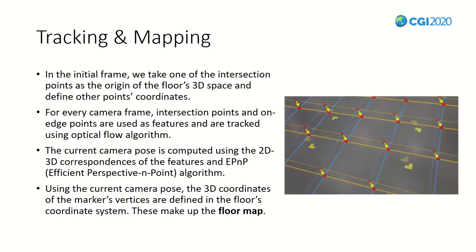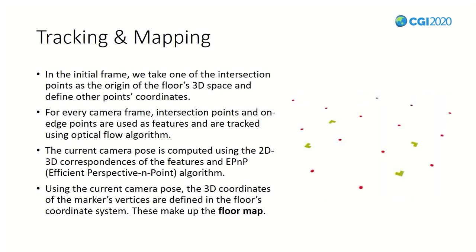After that, the intersection points of each frame and sample points from the lines are used as features for camera tracking through the optical flow algorithm. By tracking like this, 2D-3D correspondences can be configured for each frame and the current pose is also obtained through the efficient PnP algorithm. If you know the current pose, we can also calculate the 3D value of 2D features on the floor mathematically. In the same way, we can calculate the 3D value of the yellow markers and map it. We call this the floor map.